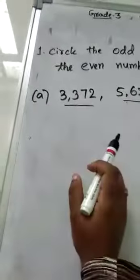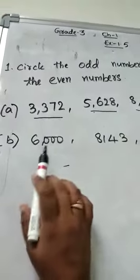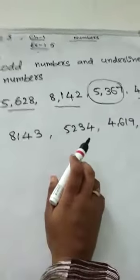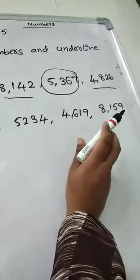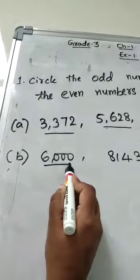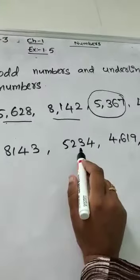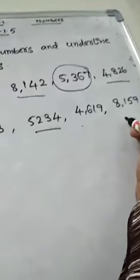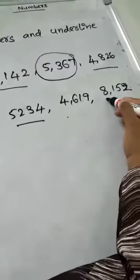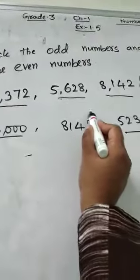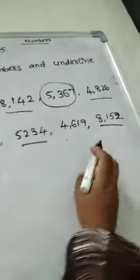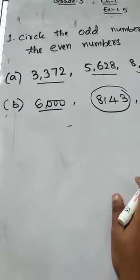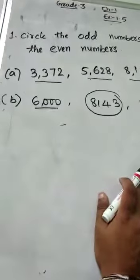Let us solve the second problem. The numbers given are: 6,000, 8,143, 5,234, 4,619, and 8,159. 6,000 is an even number, so I am underlining this. 5,234 is an even number, so I am underlining this. 8,152 ends in 2, so I am underlining this. 8,143 is an odd number, so I am circling this. 4,619 is an odd number, so I am circling this. We have completed the first part: circle the odd numbers and underline the even numbers.